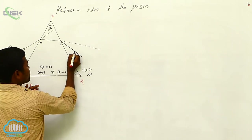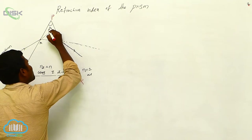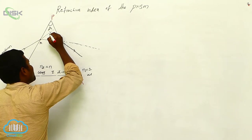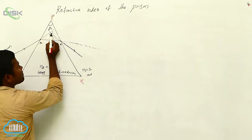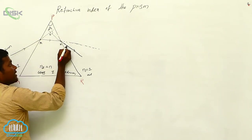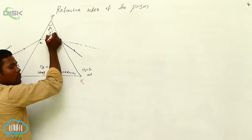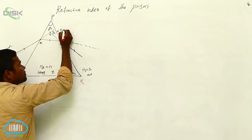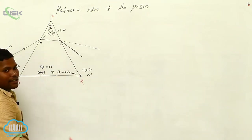The ray goes like this. If you extend this exit ray back, and also extend the incident ray, they will intersect at one point — we call it O. These two rays — the incident ray and the refracted ray — make some angle between them. That angle we call delta, or dm — minimum deviation. This is how much deviation is happening through the prism, and we are going to find that.